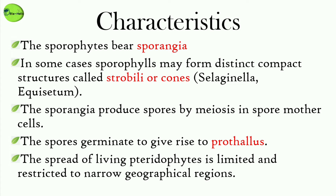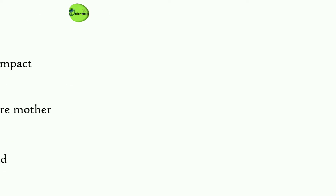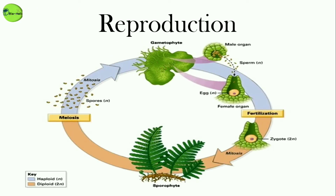The spores germinate to give rise to inconspicuous, small but multicellular, free-living, and mostly photosynthetic thalloid gametophytes, also known as prothallus. These gametophytes require cool, damp, and shady places to grow. Because of this specific restricted requirement and the need for water for fertilization, the spread of living pteridophytes is very limited and they are restricted to narrow geographical regions.